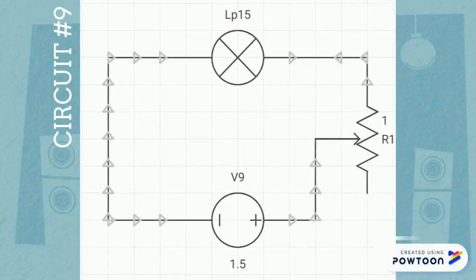Circuit number 9 was connected to a potentiometer where the intensity of the light emitted by the light bulb can be adjusted.